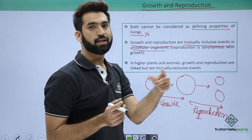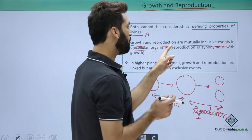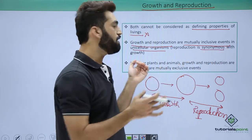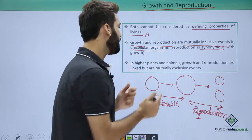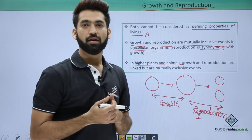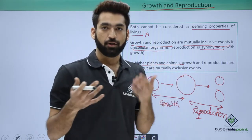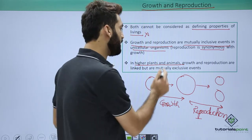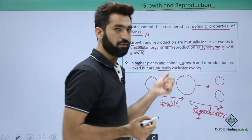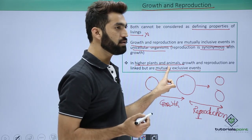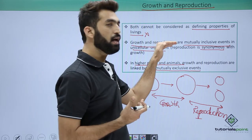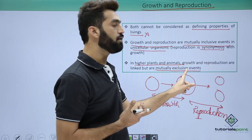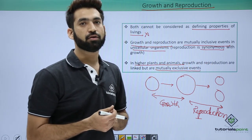Mutually inclusive is also called synonymous or synchronous. However, in higher plants and animals — multicellular organisms — you may grow from age 3 to 13 without reproducing. Growth is not always accompanied by reproduction. So in multicellular organisms, growth and reproduction are mutually exclusive and non-synchronous, unlike in unicellular organisms where they are mutually inclusive and synchronous. The next class will detail metabolism.